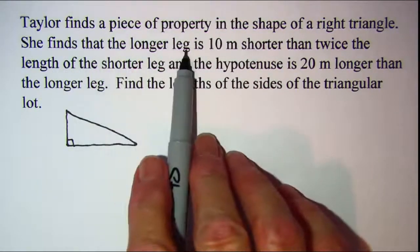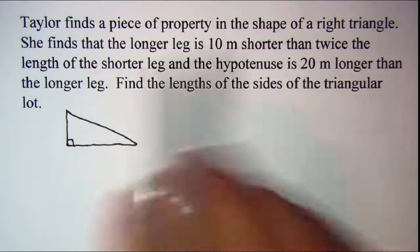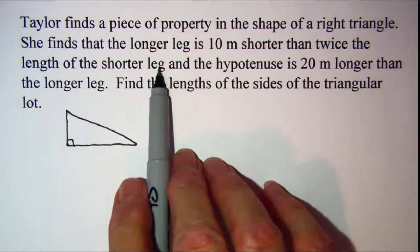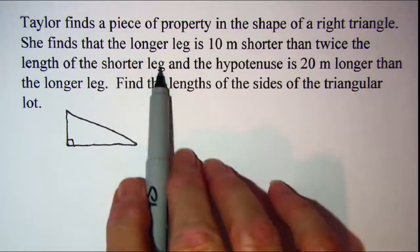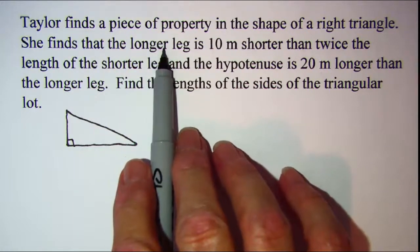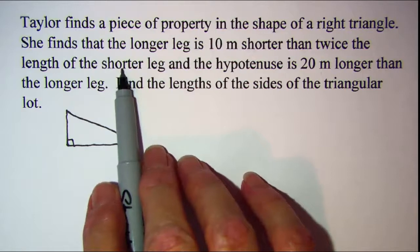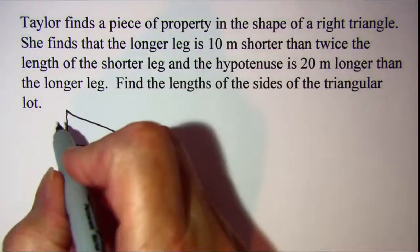The longer leg is 10 meters shorter than twice the shorter leg. So I need to let the shorter leg be my variable because then I can assign an expression to my longer leg. So let's let my shorter leg be s.